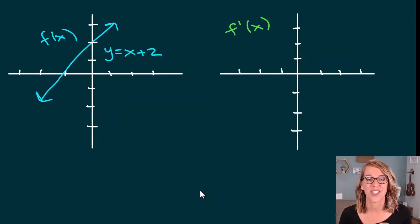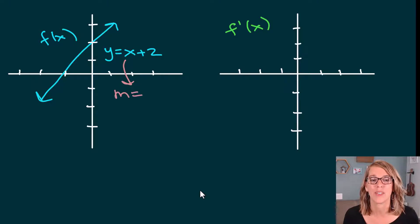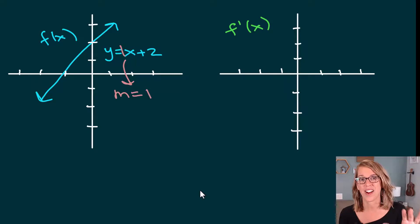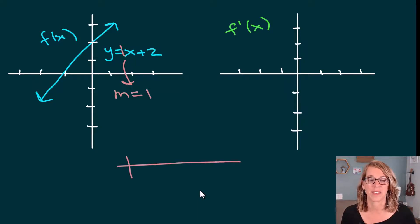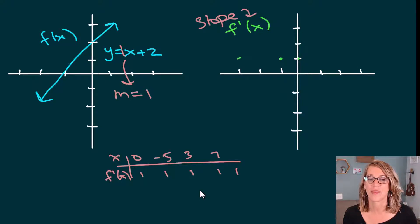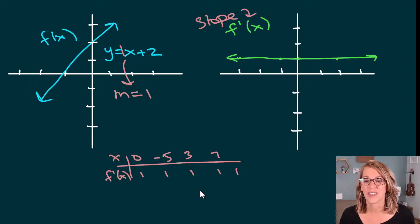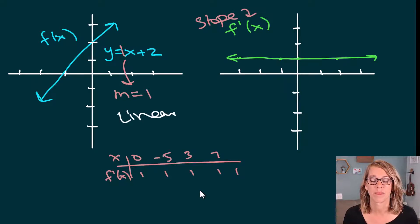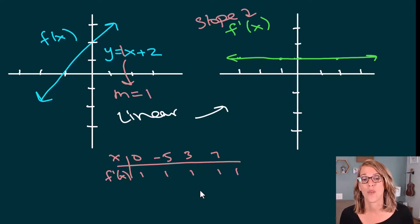In this next example I've got a linear function y = x + 2. Thanks to y = mx + b, I can identify the slope easily — m is equal to 1, the coefficient in front of x, no matter where I am. So if I make a t-table, it's a very boring one: no matter what x I put in, the derivative equals 1 everywhere. So all these points have a y-value of 1, and I end up with a flat, constant function. If the graph looks linear, you want the derivative to be a horizontal or constant function.